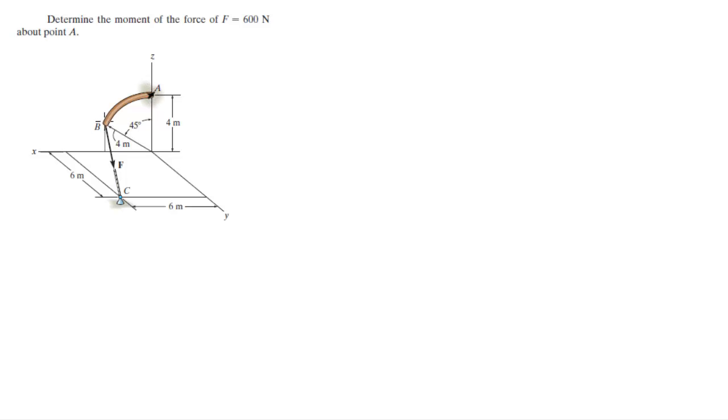So to do that, the first thing that we need to do is we need to find this vector that goes from A to B. So let's find all the points involved. Where's A and where's B? A sits at 0 in the I plus 0 in the J plus 4 in the K.